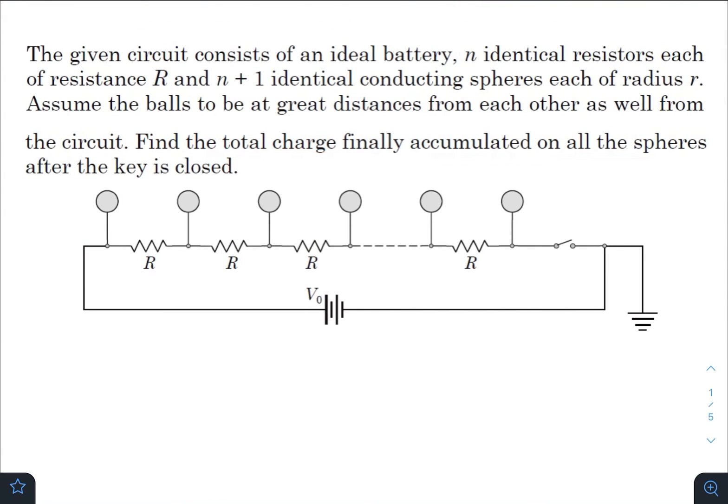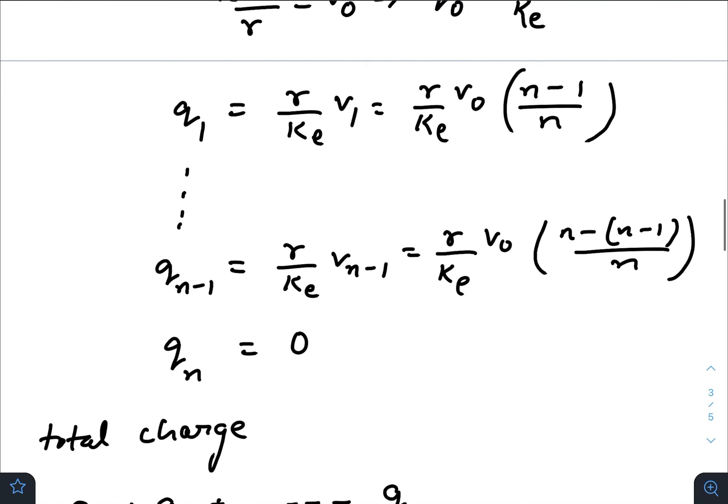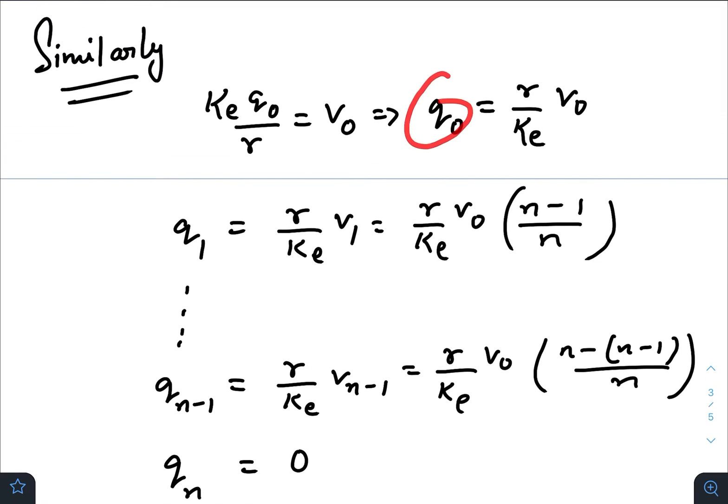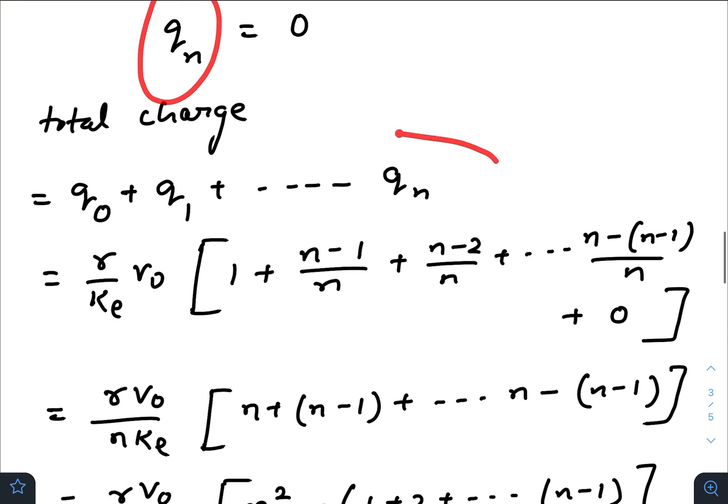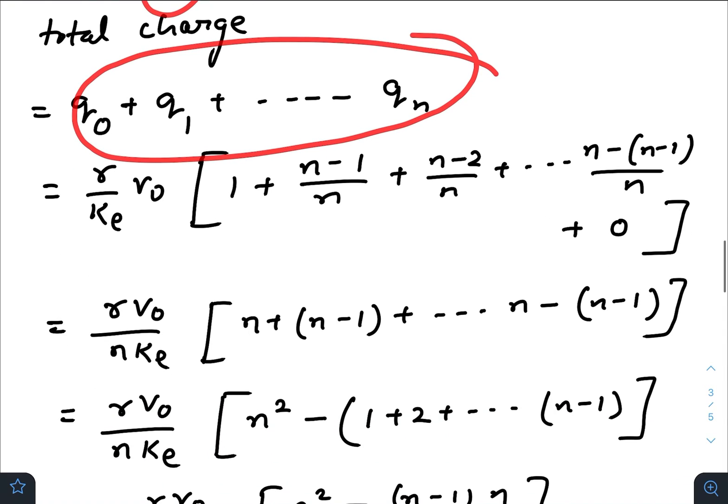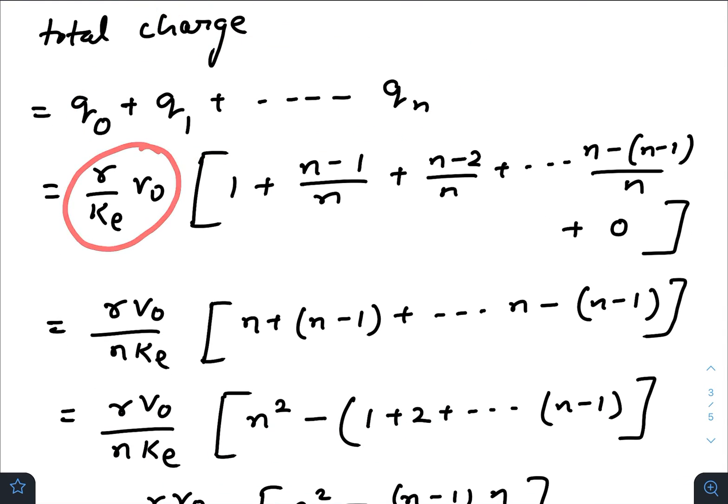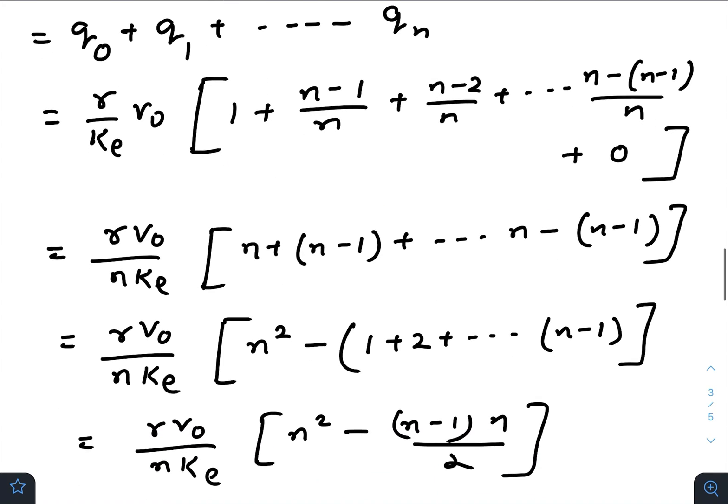The total charge is nothing but the sum of q₀, q₁, till q_n. Taking (r/ke)V₀ common, we have this series. Taking n common from the denominator, we get n + (n-1) + ... + (n-(n-1)).